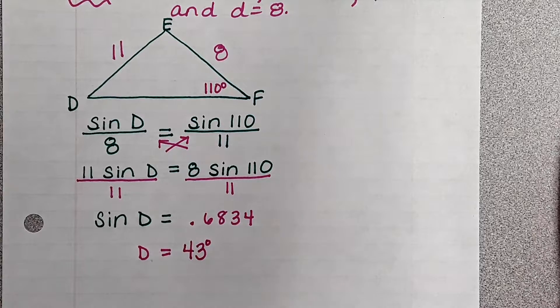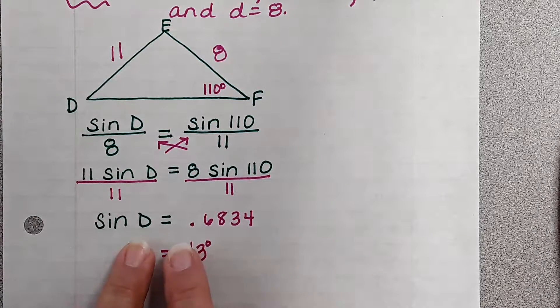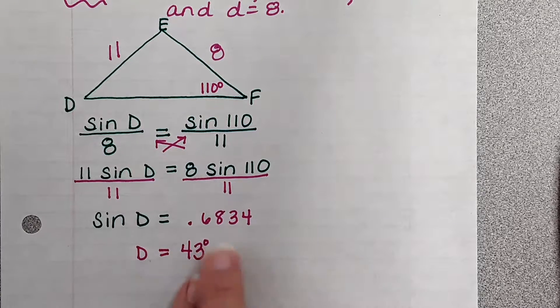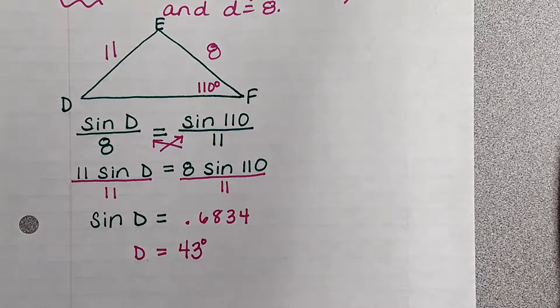So again, how did I know that I had to do the second sine? Because if I'm looking for an angle measure and I have a ratio or a proportion, then what I need to do is do second sine.